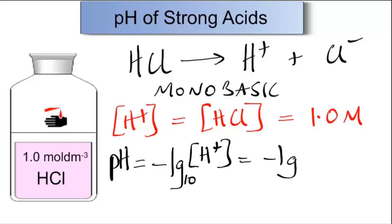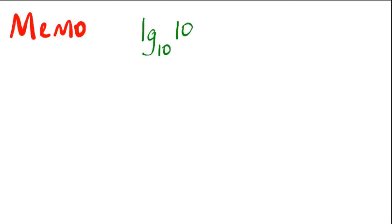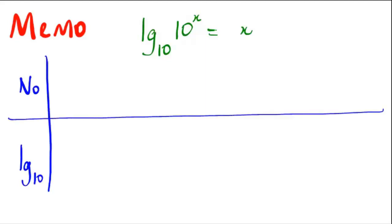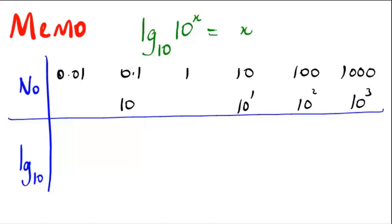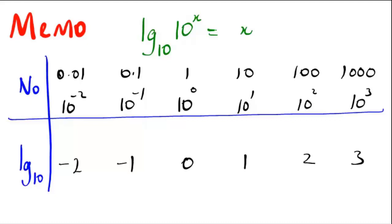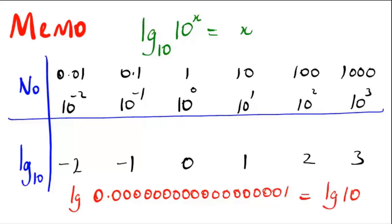Here is the all-important formula that involves pH and logs — logs to the base 10. A quick memo about logs: the log to the base 10 of 10 to the power of x is x. Some quick illustrations using a range of numbers from 0.01 through to 1000, changed to indices: 10 to the power of minus 2 through to 10 to the power of 3. And 1 can be represented as 10 to the power of 0.